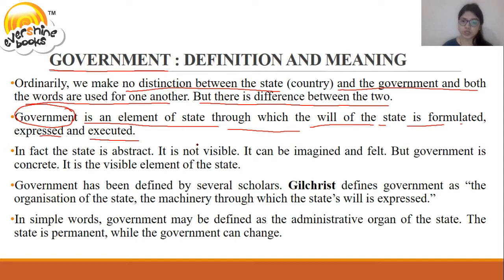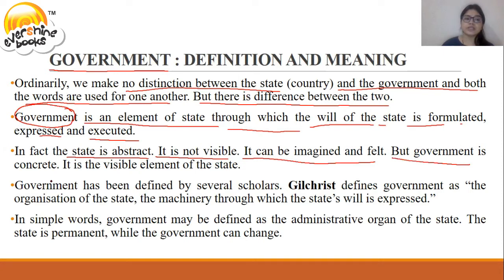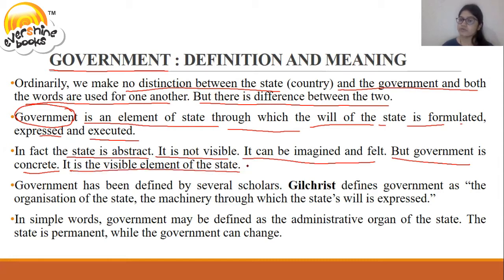Government is that through which all the work of the state is done. In fact, the state is abstract — it is not visible; it can be imagined and felt. But government is concrete. The state is abstract, something we cannot see but can imagine and feel. Government, however, is a visible element of the state.